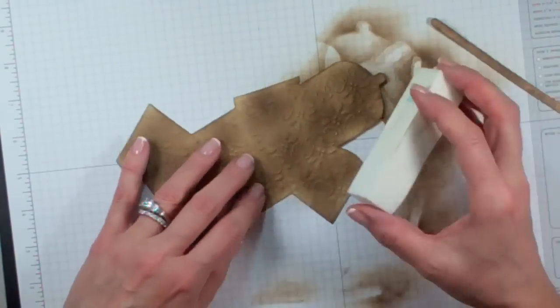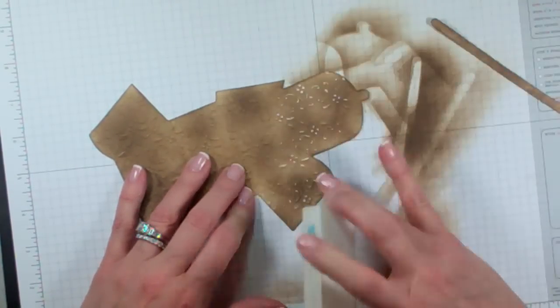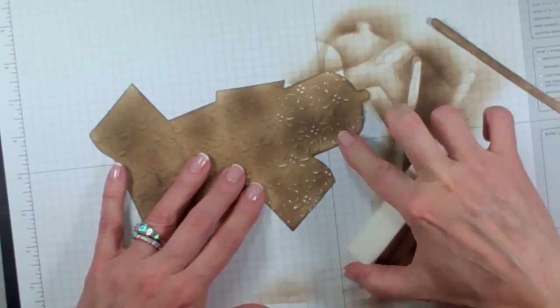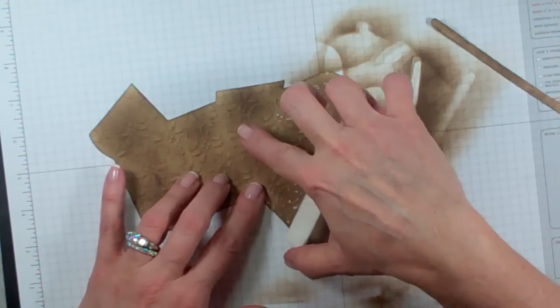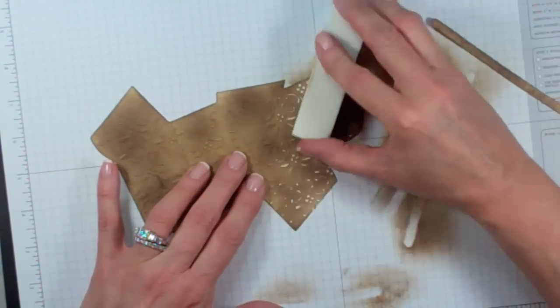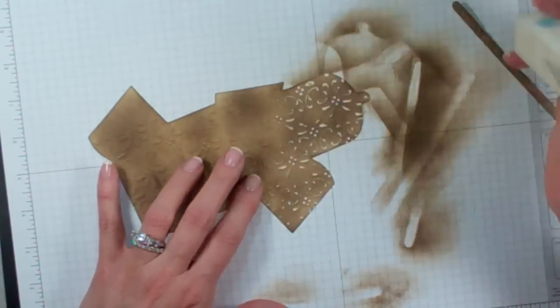You're going to take your sanding block and very gently just scrape across the surface. Because what I want you to do is just remove the color from the parts that are sticking up. I'm sanding, but I'm not pushing down.